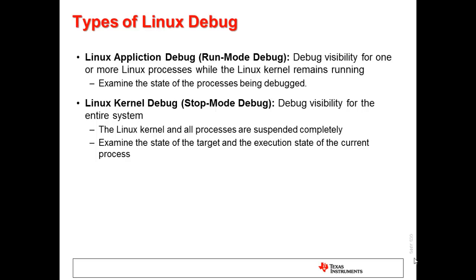Anyone developing a Linux application for a target running embedded Linux would be most interested in this. Linux kernel debug refers to debug visibility for the entire system, including the Linux kernel itself. Both the kernel and all processes are halted completely. Hence, this debug mode is also referred to as stop mode debug. People developing device drivers for the Linux kernel and other related development requiring low-level target access would be most interested in this.